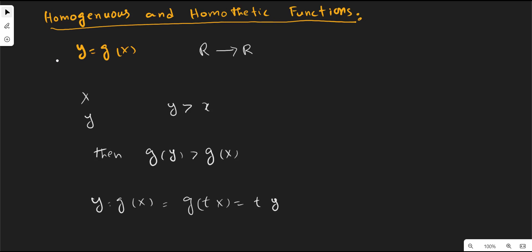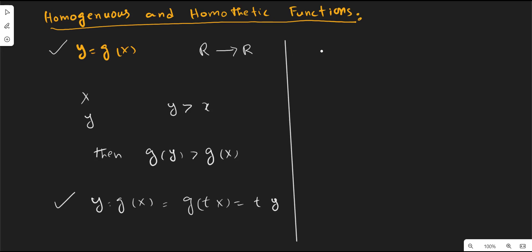Now we turn to the concept of the homothetic function. We will use two concepts: positive monotonic transformation and constant returns to scale, or homogeneous of degree 1 technology. A homothetic function is nothing else but the monotonic transformation of a homogeneous function of degree 1. So if f of x is a homothetic function, it is the monotonic transformation — shown by G — of a function which is homogeneous of degree 1.